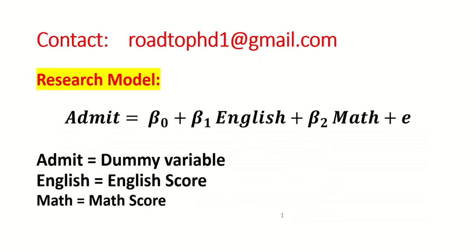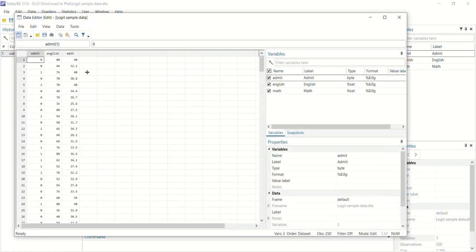For this exercise, the model that we are using contains three variables. The first is admit or admission variable, which is basically a dummy variable containing only two values, 0 or 1, and we have two continuous variables, English and Math. So here are the three variables: admit, English, and Math.